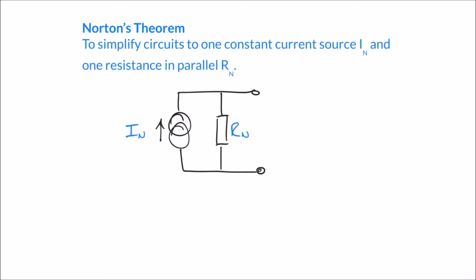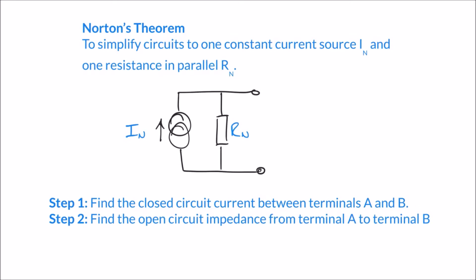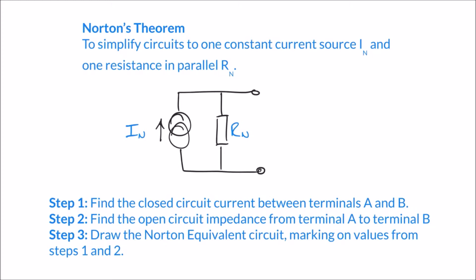Just like with Thevenin's theorem, there are three steps to follow in order to convert or simplify any given circuit down to the Norton equivalent circuit. Step one: find the closed circuit current between terminals A and B. Step two: find the open circuit impedance from terminal A to terminal B. Step three: draw the Norton equivalent circuit, marking on values from steps one and two.